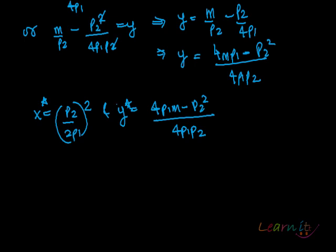But if you see it clearly, what is it that you will notice? If 4P1m is greater than P2 squared, then y star is positive, which is fine. But even then y star is greater than or equal to zero, which is fine.